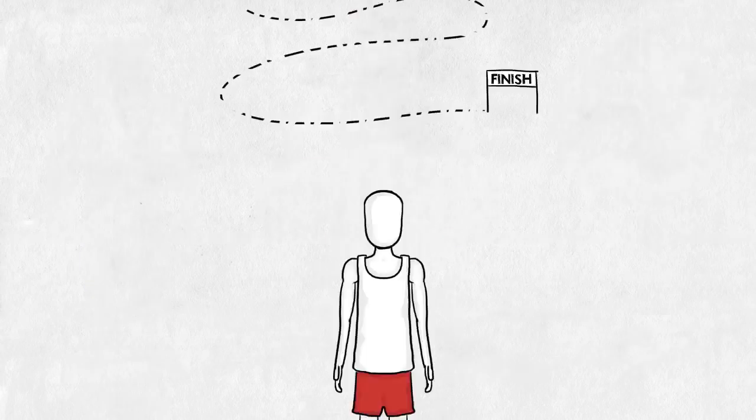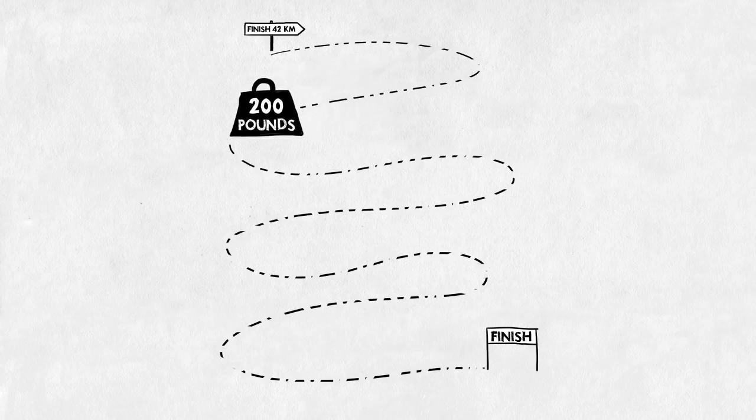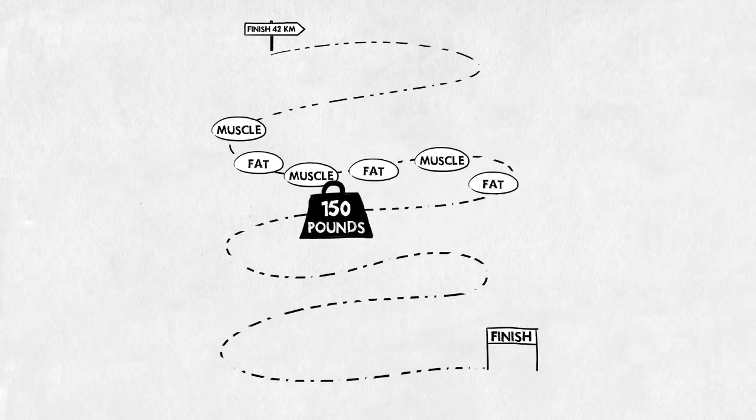The marathoner is a different story. Every pound in his body has to be carried around for a total of 42 kilometers. He gains a lot of benefits by being light. So all excessive muscle mass and fat has to be shed in order to be a top marathoner. That's why he looks so skinny.